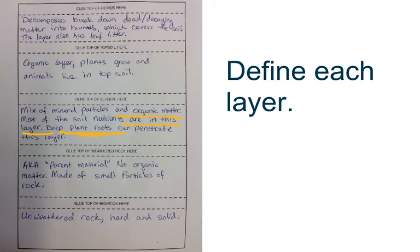Where there's weathered rock, we have parent material. There's no organic matter living there. It's made up of small particles of rock, so it's crumbled up rock.